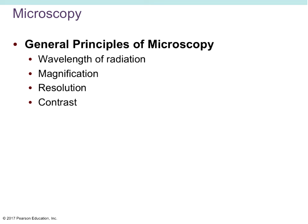The general principles of microscopy involve wavelengths of radiation — specifically for electron microscopy, but also for light microscopy we're still talking about wavelength. A good rule of thumb is that the shorter the wavelength, the higher the resolution. Resolution is the ability to distinguish two objects as separate entities from one another, even when they're really close together and really small.